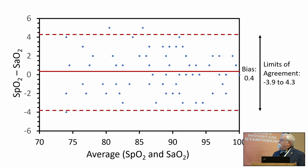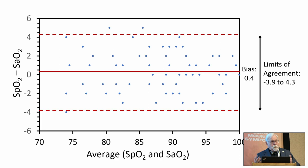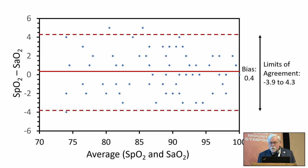You can display this data on a Bland-Altman type graph where the y-axis shows the difference between the pulse oximeter and co-oximeter, and the x-axis shows the average of the two measurements. The bias on average is close to zero - so on average the pulse oximeter and co-oximeter are about the same. However, the limits of agreement, which matter most for accuracy, are about plus or minus 4%, which is typical for the pulse oximeters we all use every day.